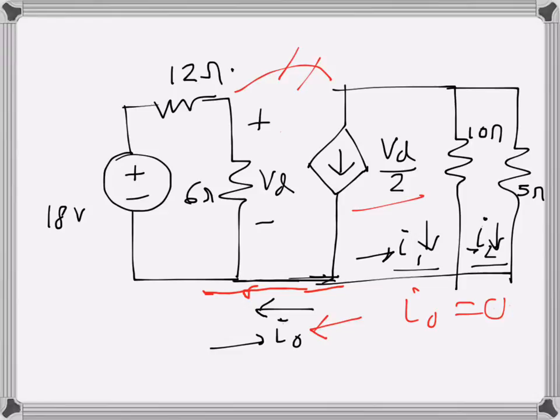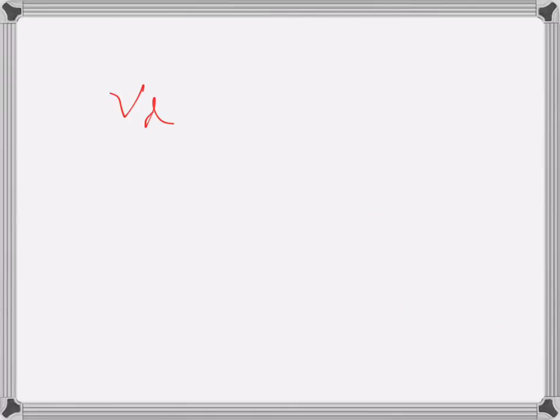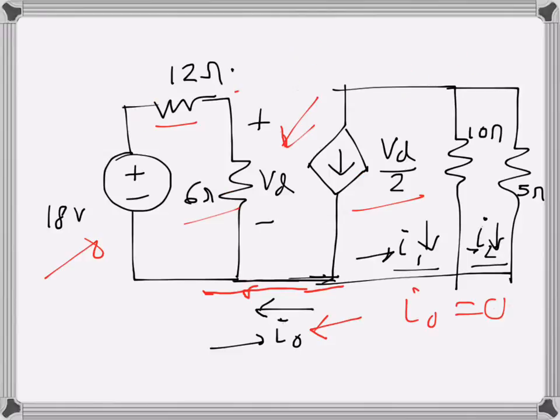This is a voltage controlled current source. The control voltage is this one, vd. We can apply a voltage divider rule to find vd. So vd will be the 18 volt supply voltage, and 12 ohms and 6 ohms are in series. So vd will be 18 over 12 plus 6 times 6, so that will be 6 volts. This current will be vd over 2.